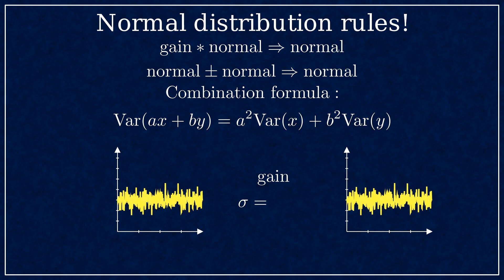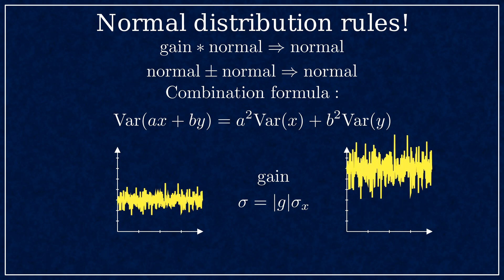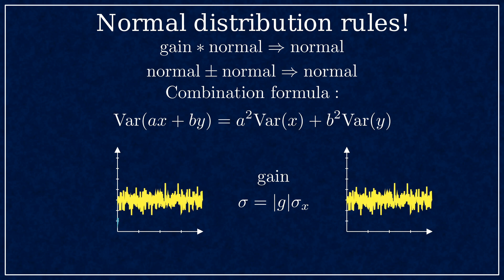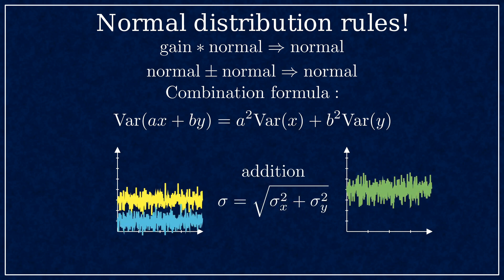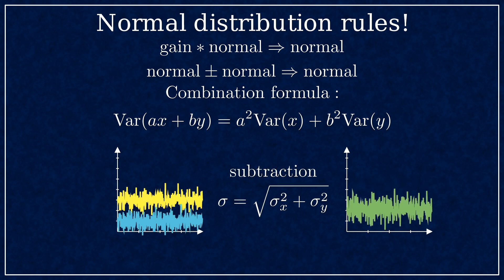Multiply noise by a constant, the standard deviation scales up with the gain. Well, the absolute value of the gain. You can't ever get a negative deviation or variance. Add the two noise signals together, the variances add up. That means the deviation is the square root of the added variances. And keep in mind for subtraction, the variances still add up.